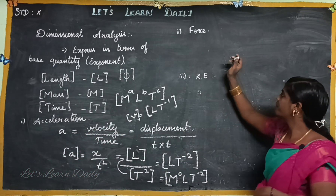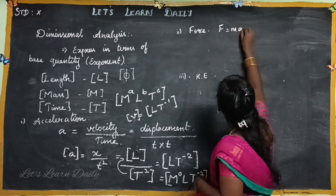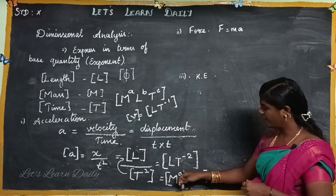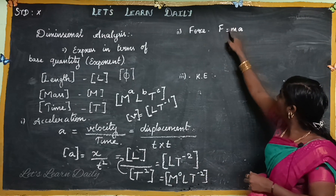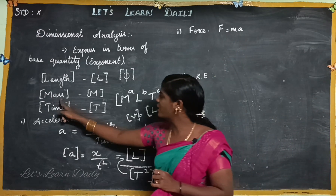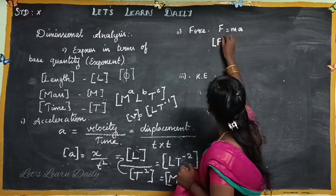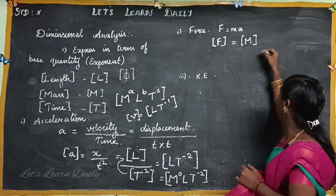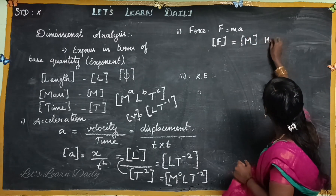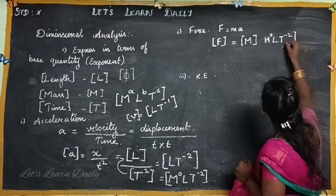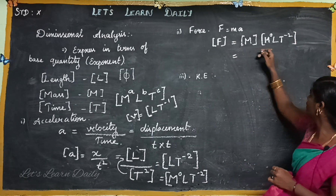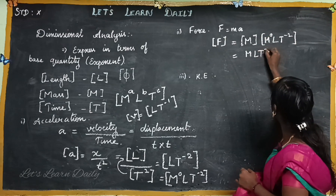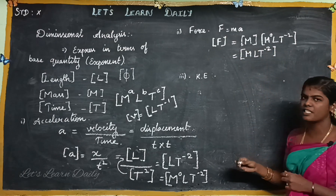The next one is force. The formula is F equals mA. Acceleration is already done: M⁰ L¹ T⁻². Now we also have mass, which has dimension M¹. So the dimension of force combines M¹ and M⁰, L¹, T⁻². Adding the powers: M to the power of 1 plus 0 equals 1. So the dimension of force is M¹ L¹ T⁻².